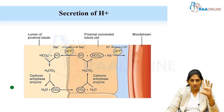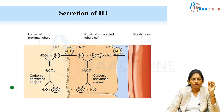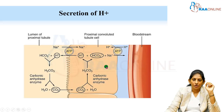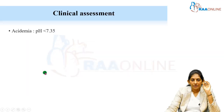Regarding secretion of H+, it is absorbed from the bloodstream through the sodium-hydrogen ATPase, where H+ comes from the bloodstream into the proximal convoluted tubule cell while sodium is reabsorbed. This H+ is then secreted into the tubular lumen via the same sodium-hydrogen ATPase.